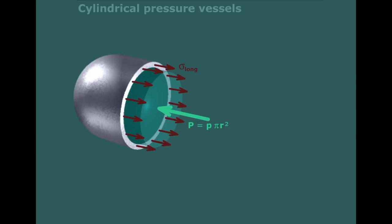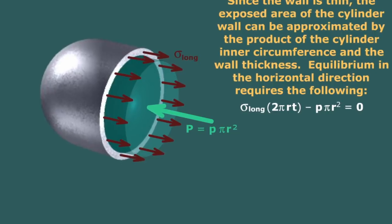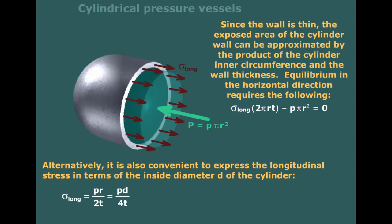Similarly, on the wall of that vessel, there will be stresses, which we call sigma longitudinal. To determine the resultant force of that, we multiply it by the area at which the stress acts on, which is the perimeter of the circle multiplied by the thickness — that is 2 pi r times t. Using the equilibrium equation in the longitudinal direction, we come up with sigma longitudinal equal to pr over 2t, or pd over 4t. This is exactly similar to sigma_a that we had before for the spherical pressure vessel.